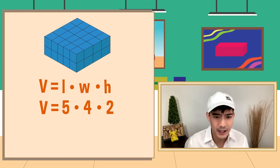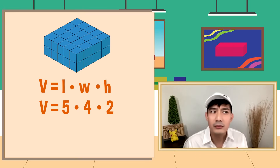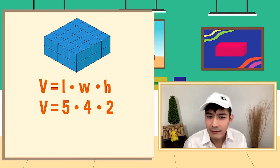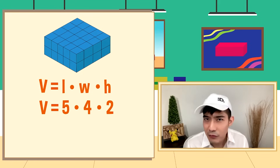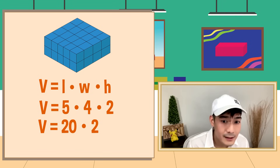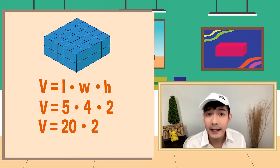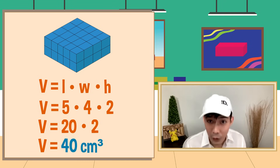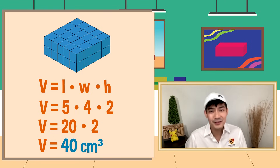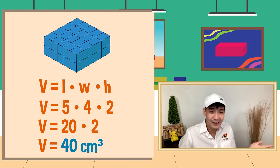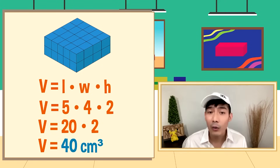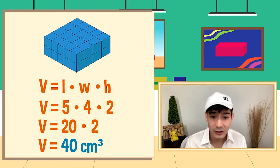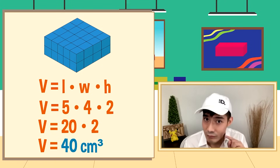Substitute natin yung mga values natin. V is equal to length times width times height. Length ay 5, width ay 4, height ay 2. So 5 times 4 times 2. 5 times 4 will give us 20, then multiply by 2, makuha natin ay 40 cubic centimeters. Parehong pareho — pwede natin itong bilangin at 40 cubes din ang kuha nating sagot. Don't forget the label: cubic centimeters.